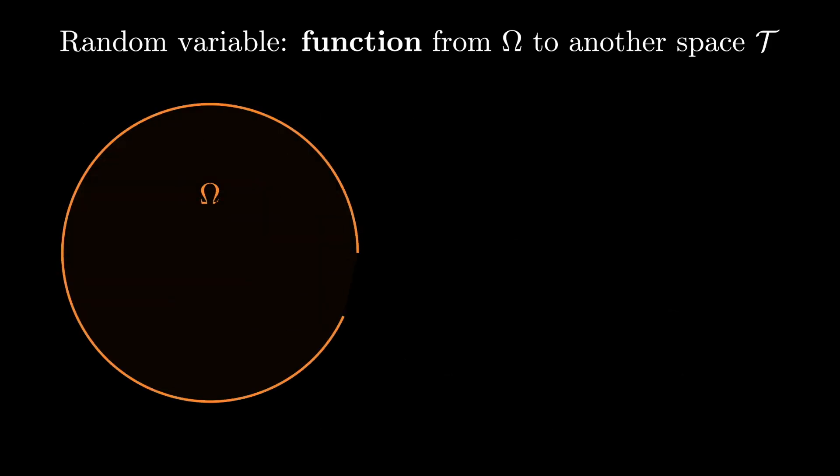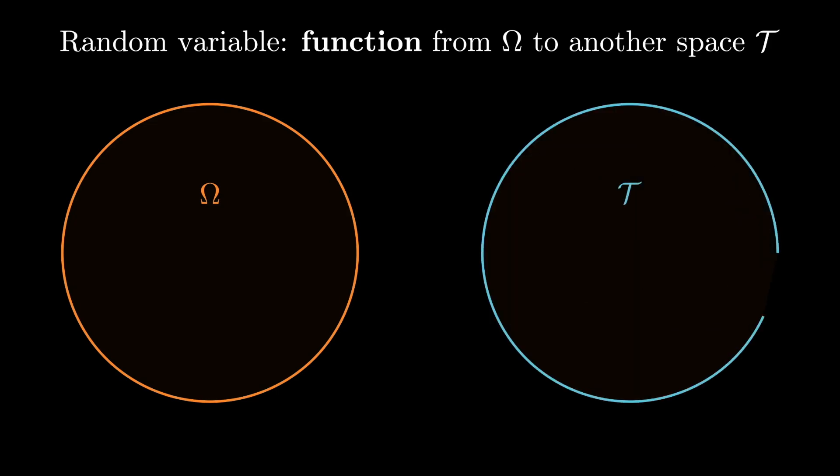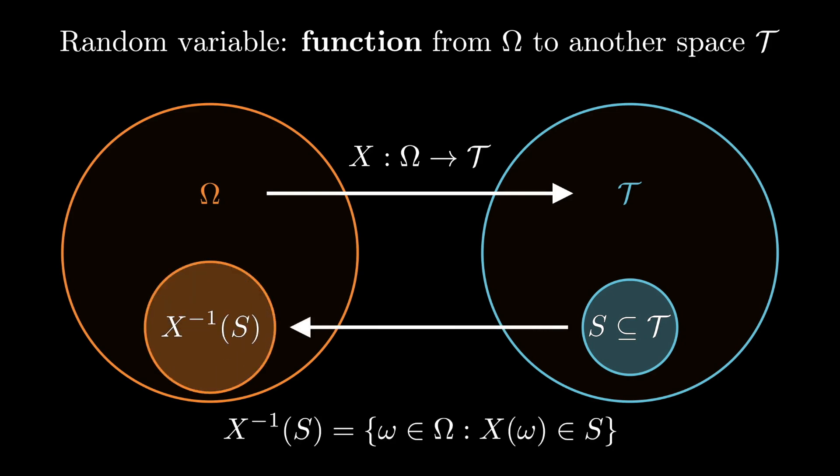The way we connect random variables to probability is we think about the pre-image of any subset of T. So here's a cartoon illustration in which we have a set on the left omega and a set on the right T, and the function X, that is the random variable, maps from omega to T. Now if there's some subset S of T whose probability we want to reason about, then we think about its pre-image in omega under the map X. That is, we look at the subset of omega that if you applied X would lead to the set S. We denote this as the function X inverse.